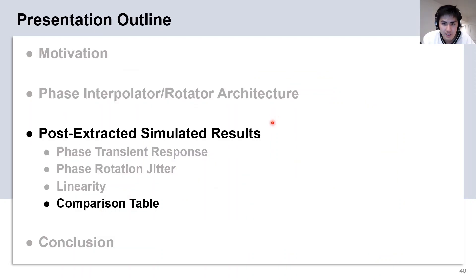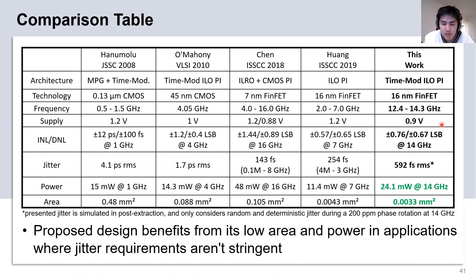Next, I would like to present the comparison table to compare our PI with some of the previous PI shown in the literature. Overall, our work operates at the fastest frequency with the highest locking range in comparison to the other time-modulated PI architectures, showing the benefits of technology scaling. While jitter and linearity aren't as competitive compared to the more recent ILO-based architectures, our PI features a much lower area and power consumption. Ultimately, this design is good for dense ILO applications that doesn't require stringent jitter requirements.